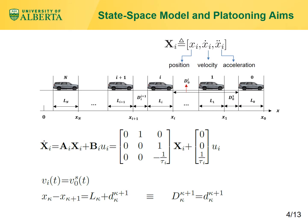Bold capital X_i denotes position, velocity, and acceleration of the i-th vehicle. Using the formula from the previous slide, the state-space model for the i-th vehicle is as highlighted. Assume the desired velocity for followers is the constant static velocity of the leader, and the desired distance between consecutive vehicles κ and κ+1 is small d subscript κ superscript κ+1.